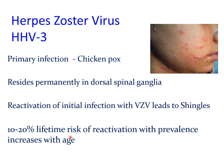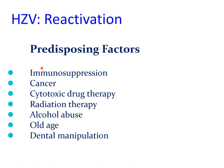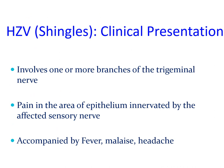There is a 10 to 20 percent lifetime risk of reactivation, with prevalence increasing with age. Reactivation can be seen in patients with immunosuppression, cancer, cytotoxic chemotherapy or radiation therapy, alcohol abuse, old age, and sometimes following dental manipulation. Secondary infection with herpes zoster virus is known as shingles and usually involves one or more branches of the trigeminal nerve.